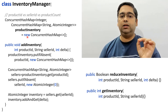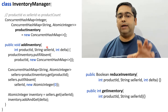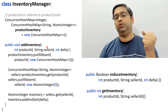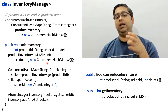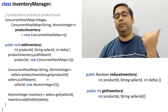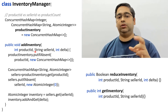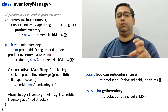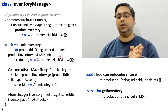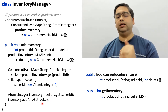The last method in InventoryManager is addInventory. Sellers periodically buy products from companies and add them to their warehouse — for example, buying 100 smartphones from Samsung. This method adds a new product entry for a given seller if it doesn't already exist, and then updates the inventory by increasing it by delta.